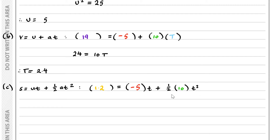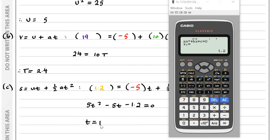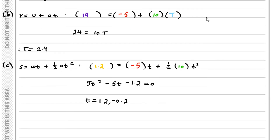We can find a quadratic for T. Rearranging, we see 5T squared minus 5T minus 1.2 equals 0. Solving for T using the calculator with a polynomial of degree 2 with coefficients 5, minus 5, and minus 1.2, we end up with T equals 1.2 and T equals minus 0.2. Therefore we can conclude that T is equal to 1.2 seconds.